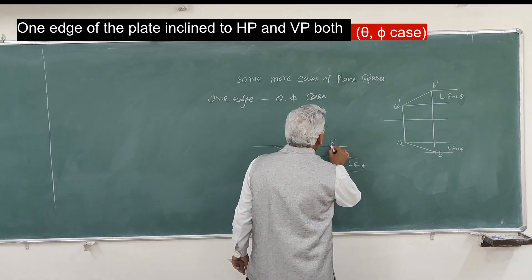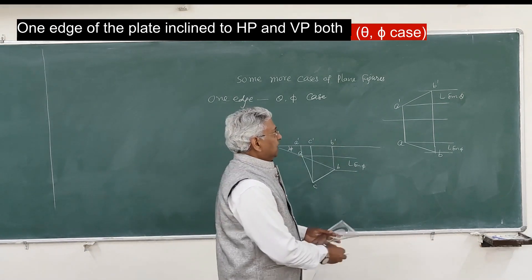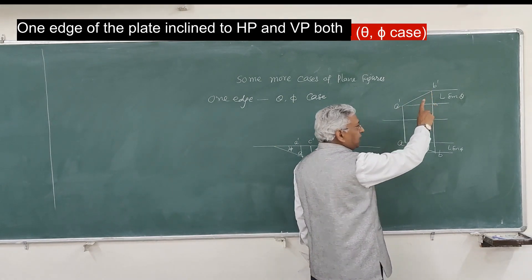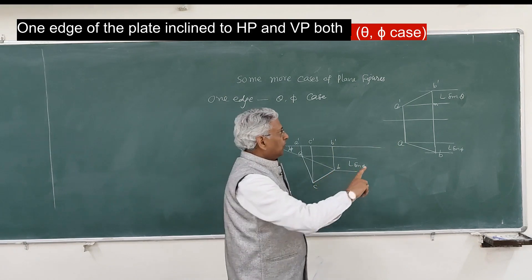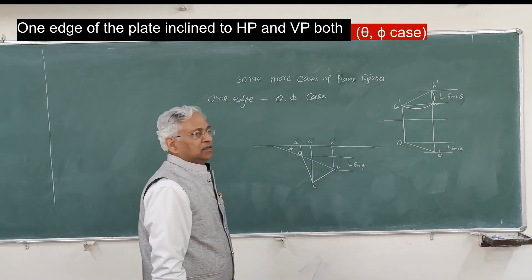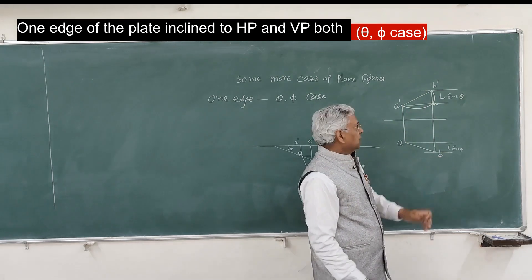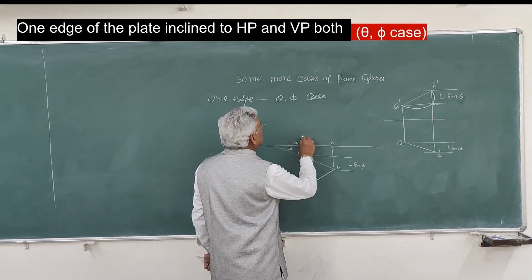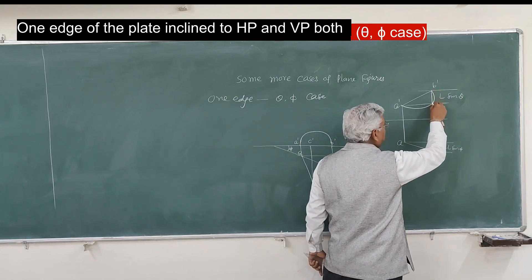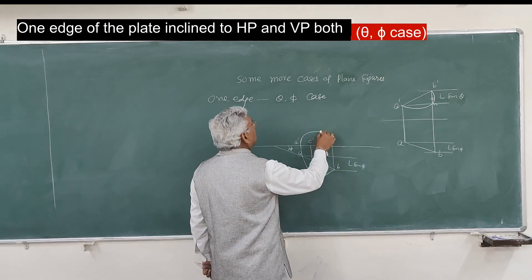There are two methods to solve this. You can draw a point M such that BM equals L·sin(theta). This uses the right-angle triangle property: if you draw a semicircle on diameter A'B', it will pass through this point M. Draw a semicircle on A'B' and take the distance BM equal to L·sin(theta).